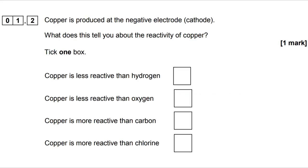We then go on to consider what's happening at the negative electrode, and we're told that we're making copper. So what does this tell us about the reactivity of copper? You can use your knowledge of the reactivity series here, which hydrogen is often included in. Copper is less reactive than hydrogen.